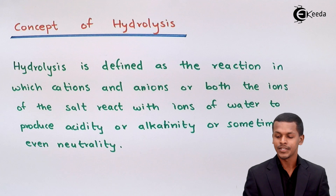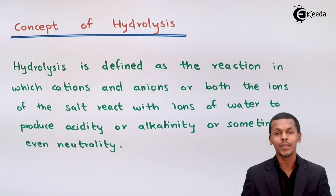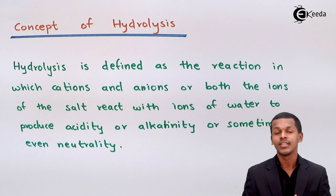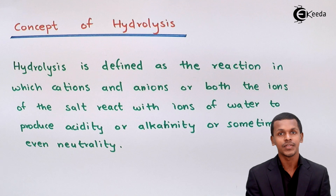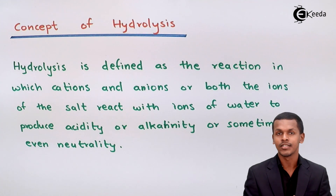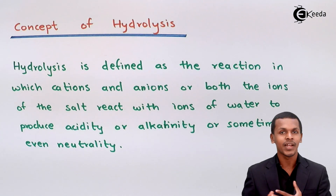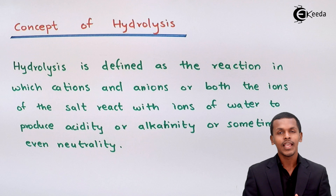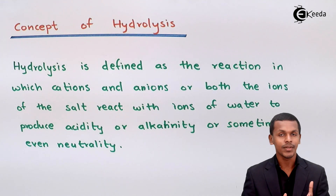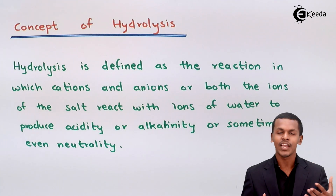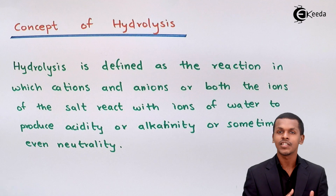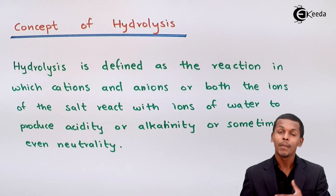We have seen in the states of matter chapter that when a salt is dissolved in water it is surrounded by water molecules — for example, Na⁺ and Cl⁻ ions are surrounded by water molecules. So when a salt is dissolved in water, it can react to produce a particular product, and because of intermolecular interaction, the concentration of either H⁺ or OH⁻ ions increases, making the solution more acidic, more basic, or sometimes neutral.